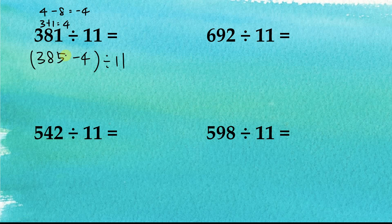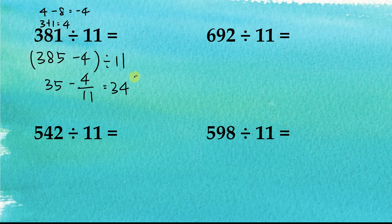So 385 divided by 11: the sum of 3 and 5 is equal to 8, therefore 385 divided by 11 equals 35. Then it's minus 4 over 11, so the answer is 34 and 7 over 11.